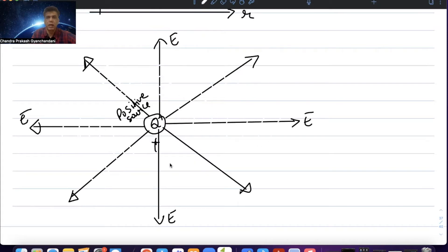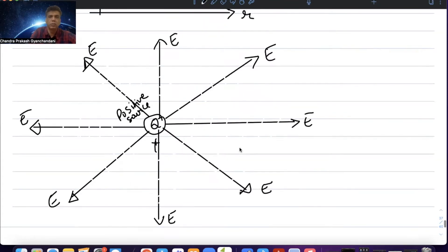To give the r distance, the formula is k Q upon r squared. If the source is negative,